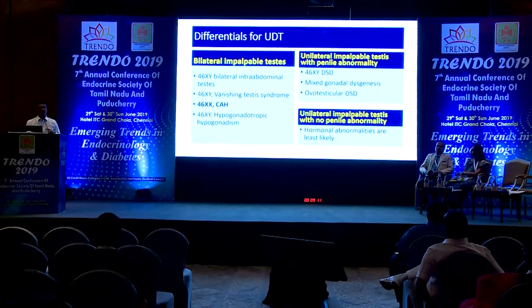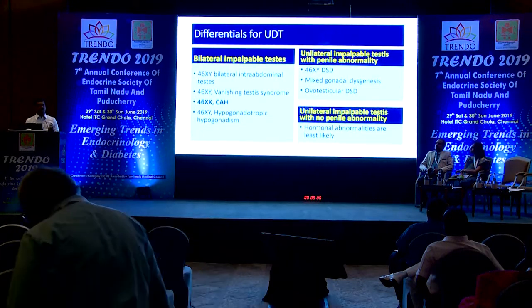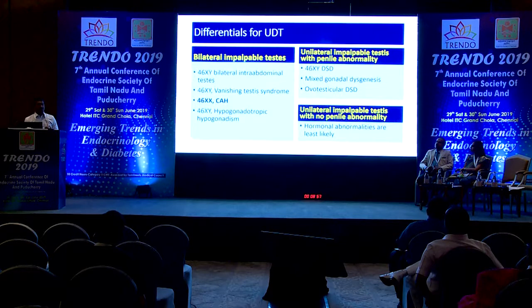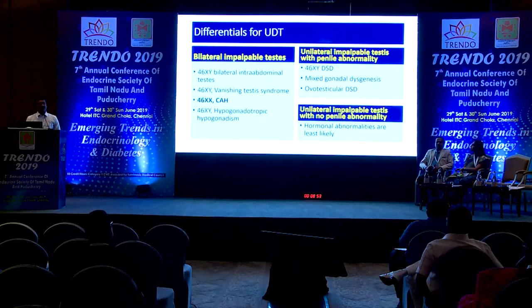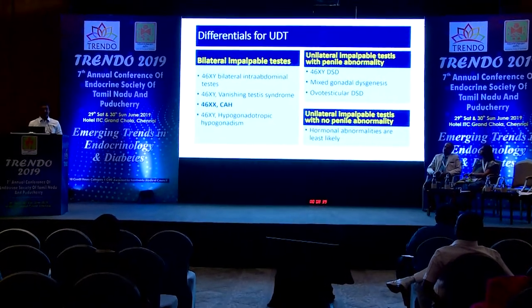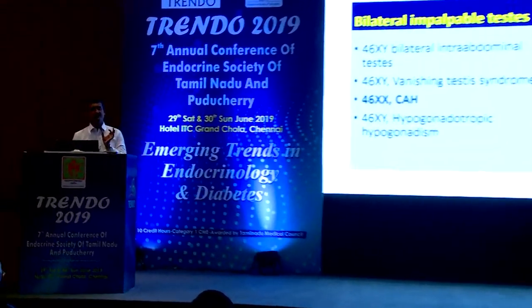46XY hypogonadotropic hypogonadism may also present as bilateral undescended testis, often with micropenis — this is one condition that may particularly benefit from hormonal therapy. Another scenario is unilateral impalpable testis with an associated penile abnormality such as hypospadias or micropenis; this group may have a mild disorder of sex development, such as partial androgen insensitivity, mild 5-alpha reductase deficiency, or a milder testosterone synthetic defect, or rarely mixed gonadal dysgenesis. These patients should be referred first to endocrinologists, then to urologists.